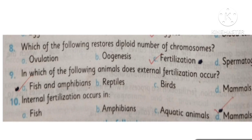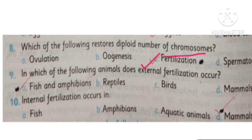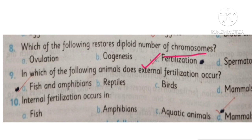MCQ number 8: Which of the following restores the diploid number of chromosomes? This is the process of fertilization, which ultimately restores the diploid number of chromosomes.